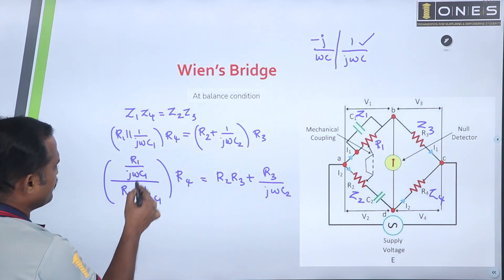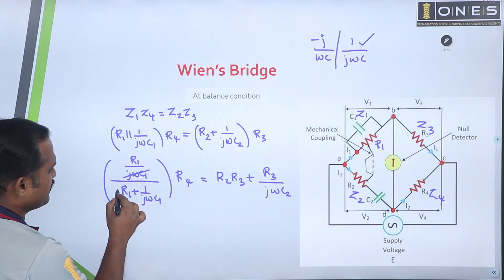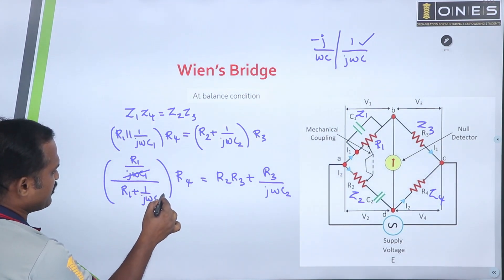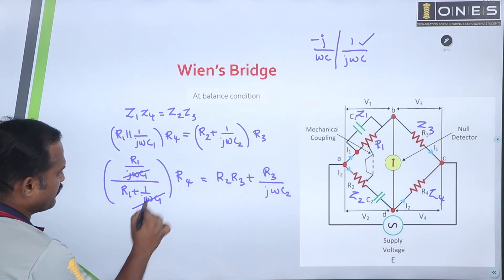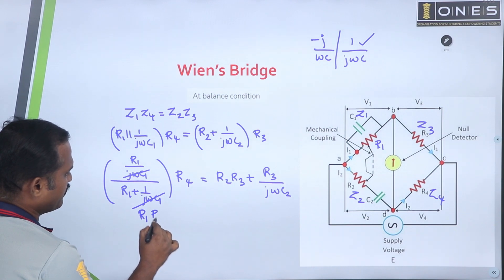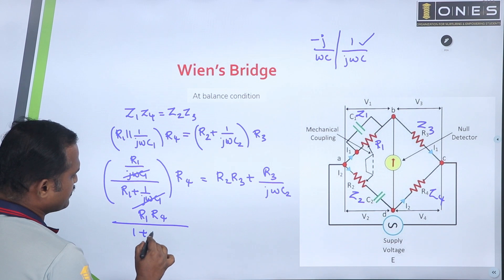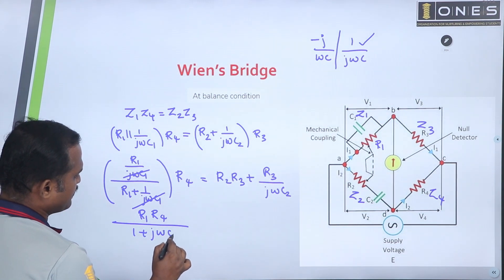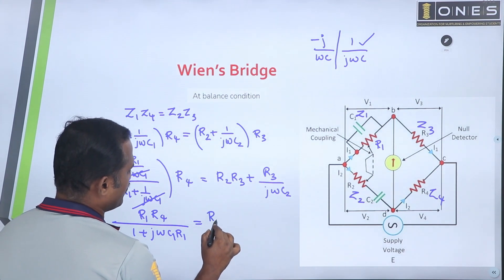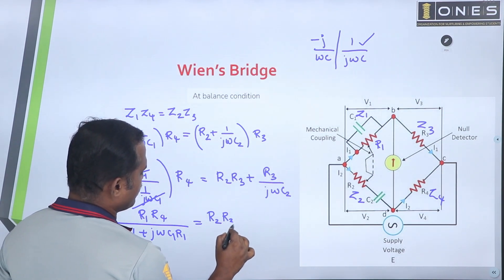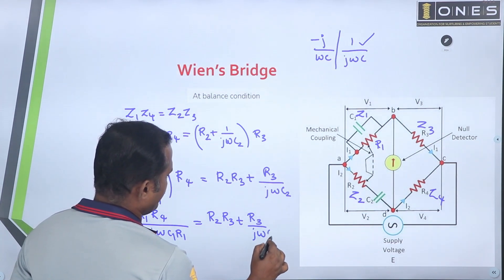Solving the equation, the denominator involves j-omega-C1 and R4. Cross-multiplying gives R1·R4 multiplied by j-omega-C2, which equals R2·R3 into j-omega-C2, multiplied by (1 plus j-omega-C1·R1) plus R3 multiplied by (1 plus j-omega-C1·R1·R2).